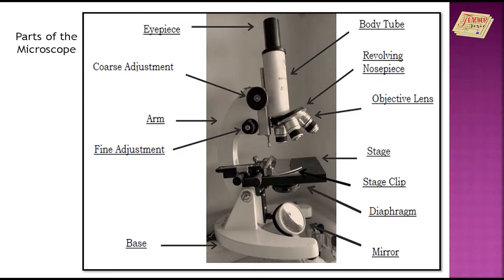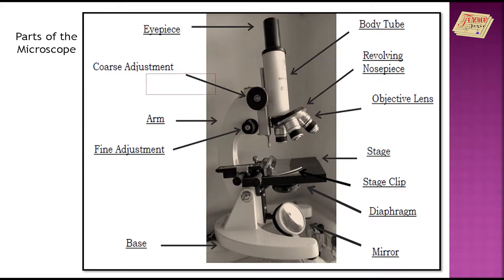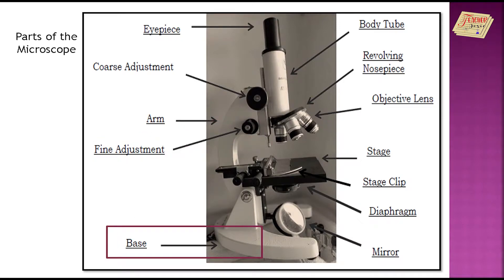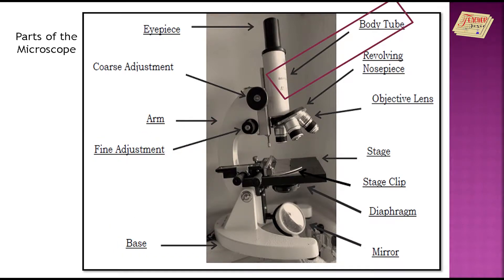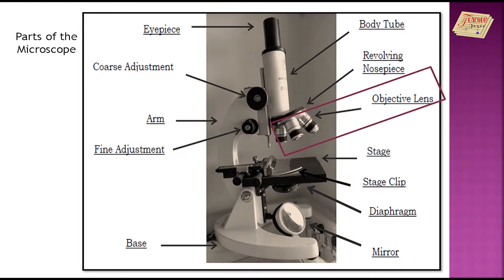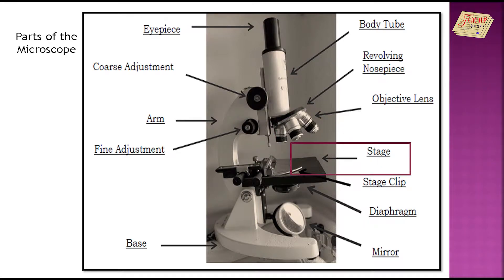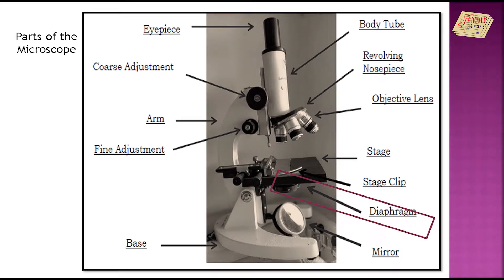Here are the following parts of the microscope: the eyepiece, coarse adjustment, arm, fine adjustment, base, body tube, revolving nose piece, objective lens, stage, stage clip, diaphragm, and mirror.